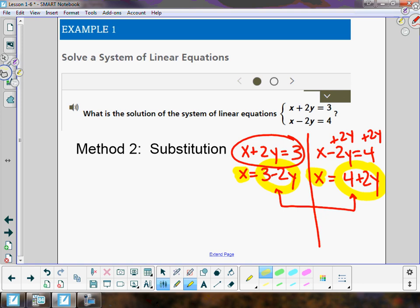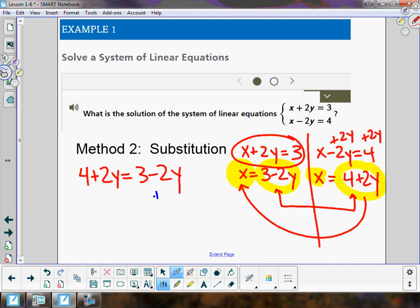This is known as substitution. Basically, in this equation, I'm substituting 4 + 2y. So I'm going to set 4 + 2y equal to 3 - 2y. Let's see what we get. Let's begin by adding 2y to both sides. I'm going to get my y terms on the left while I subtract 4 from both sides.